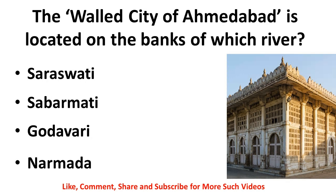The Walled City of Ahmedabad is located on the banks of which river — Saraswati, Sabarmati, Godavari, or Narmada? We know that Sabarmati flows through Ahmedabad, so Sabarmati is the river on the banks of which the Walled City of Ahmedabad is located.